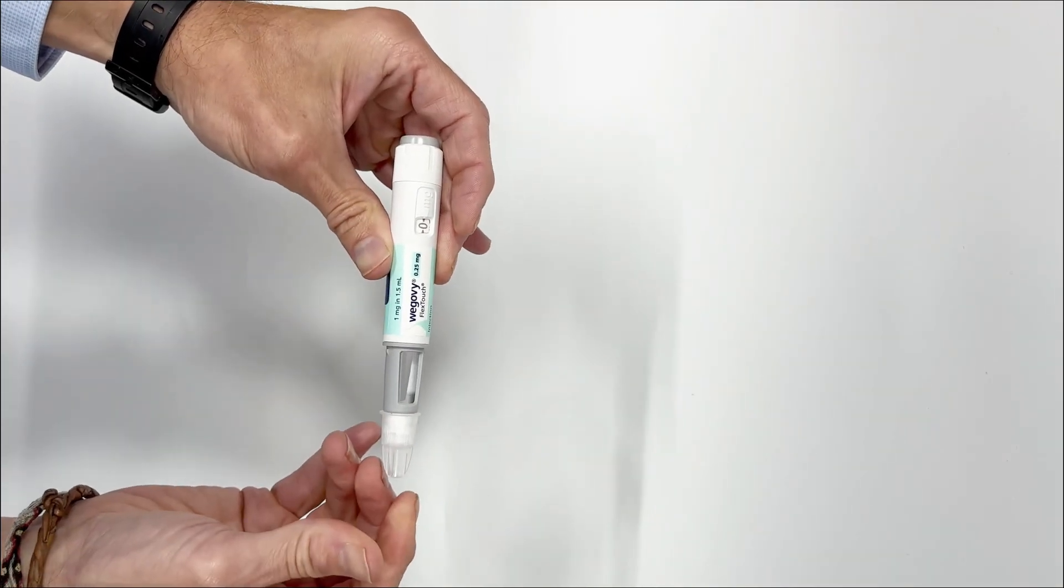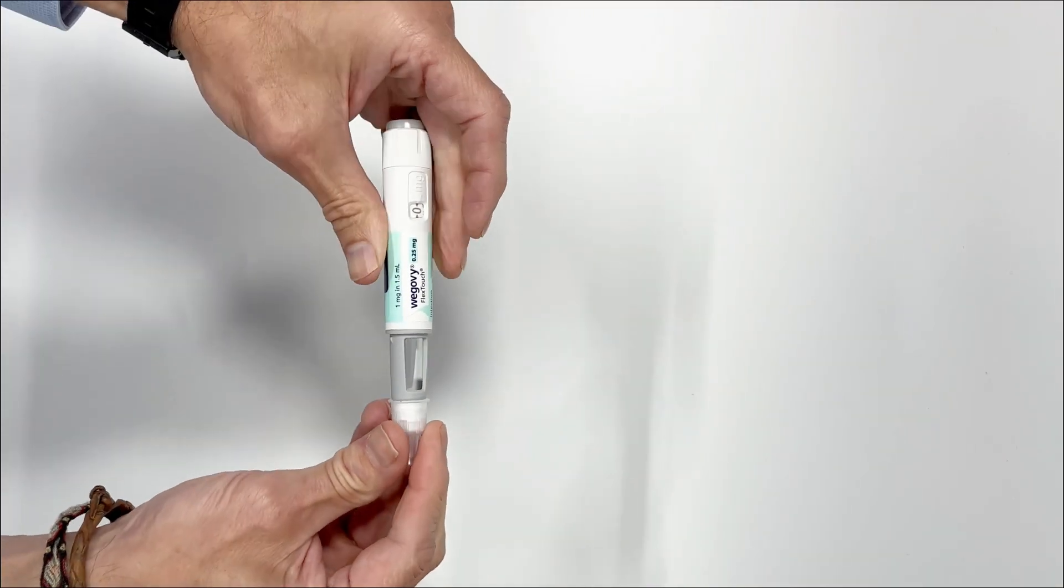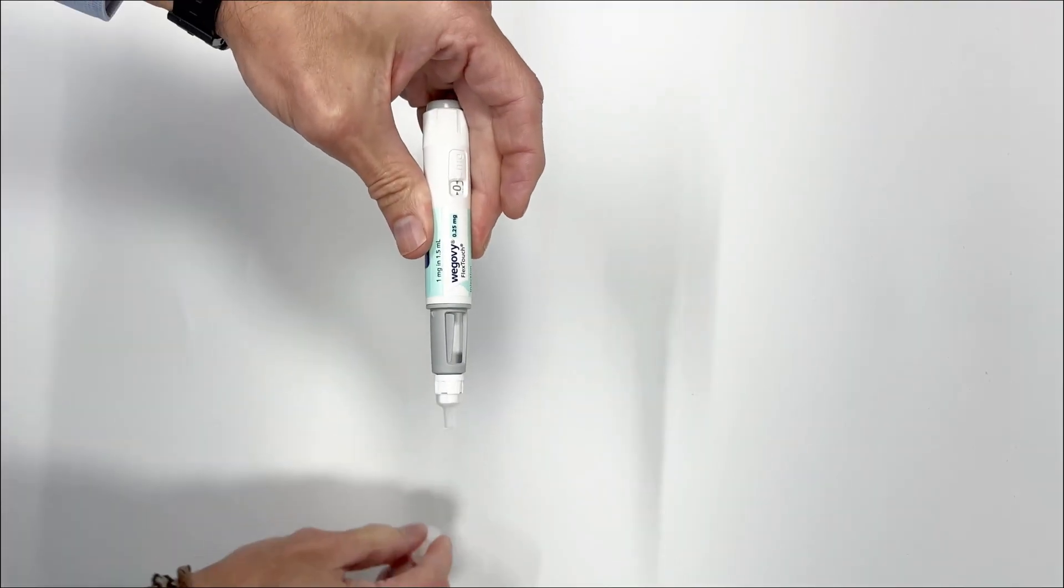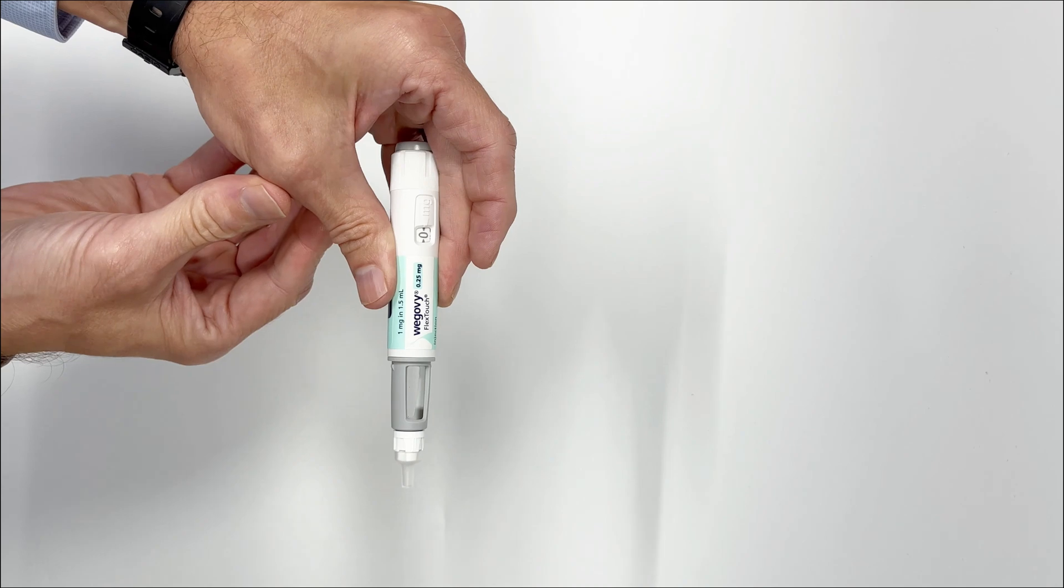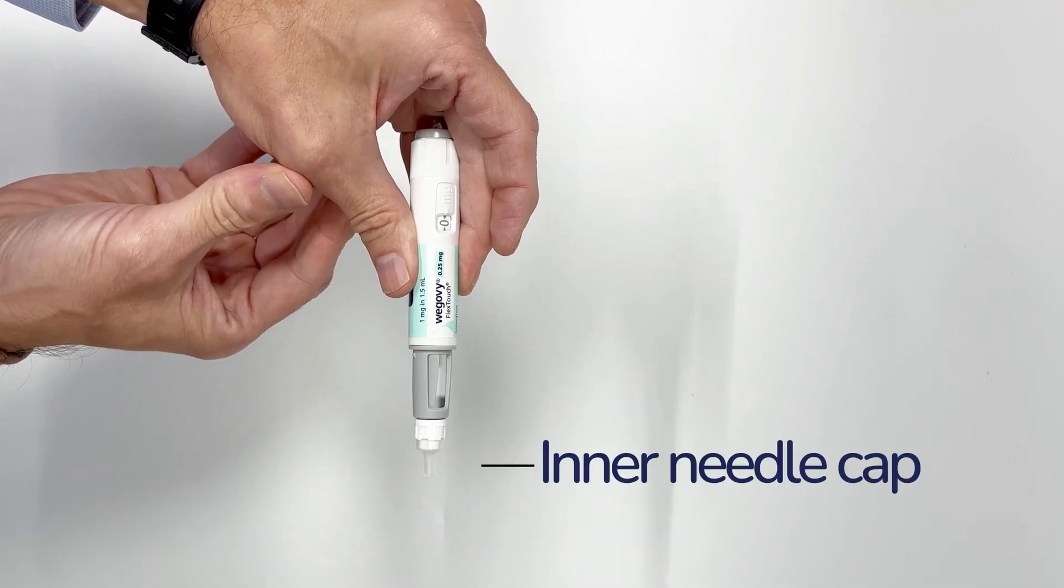Pull off the outer needle cap and save this for later. You'll need it to safely remove the needle from the pen after injection. Inside you'll see a smaller inner needle cap covering the needle. Pull off the inner needle cap and discard it.